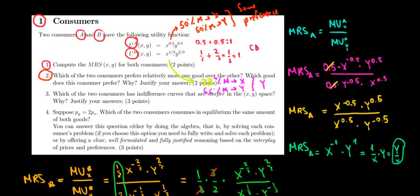Now let's answer question 3 in this video as well because it's going to be also an intuitive answer which we can do pretty fast. Which of the two consumers has indifference curves that are steeper in the XY space and why?